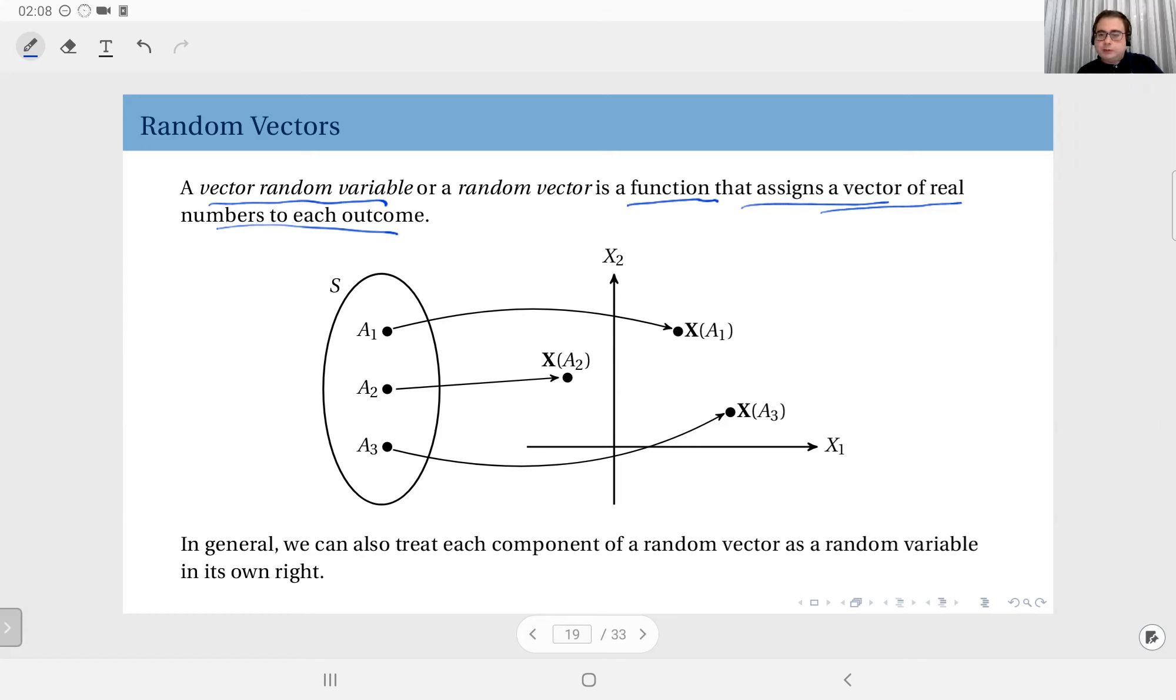Here you see an example. You have the sample space S, and here we have three possible outcomes. The outcome a1 is mapped to this vector here in this two-dimensional space, and the outcome a2 is mapped to this vector, and a3 is mapped to this vector.